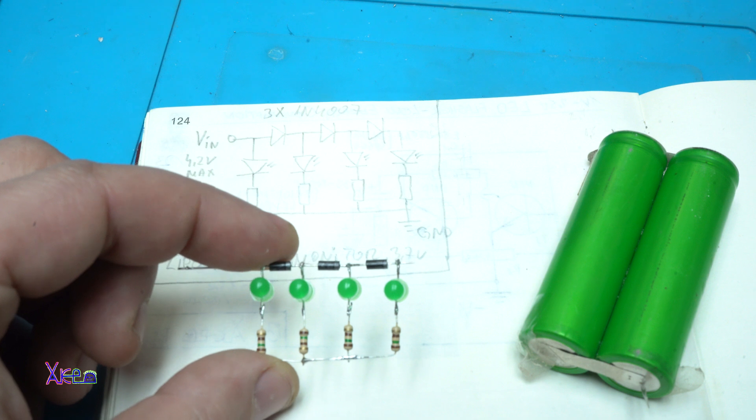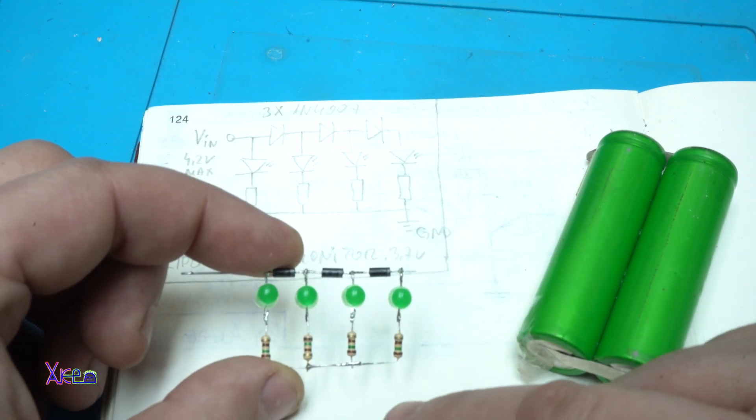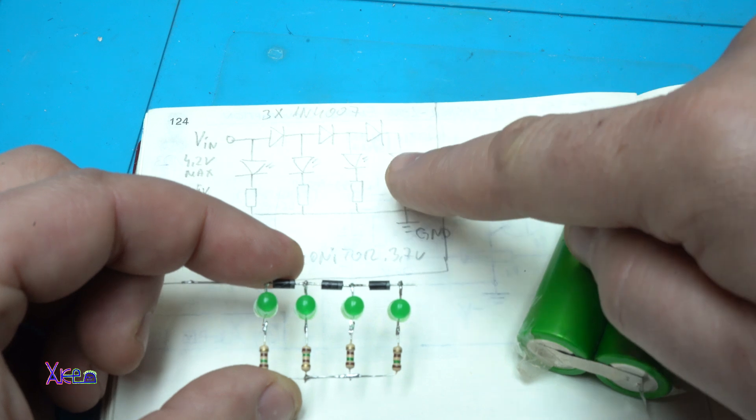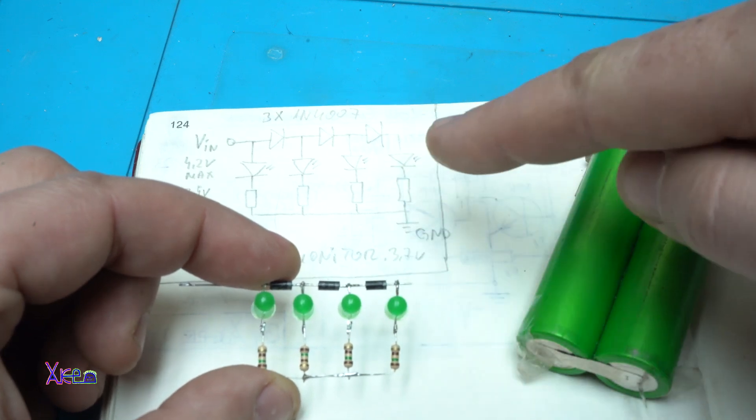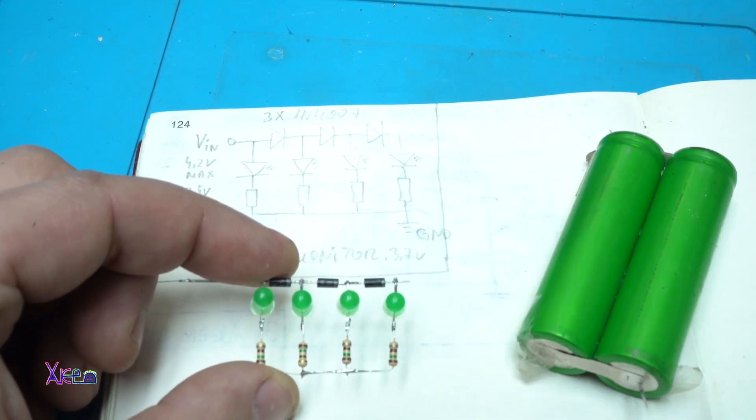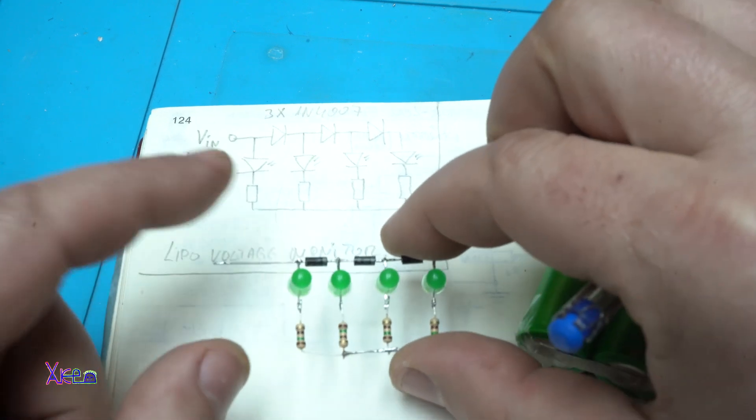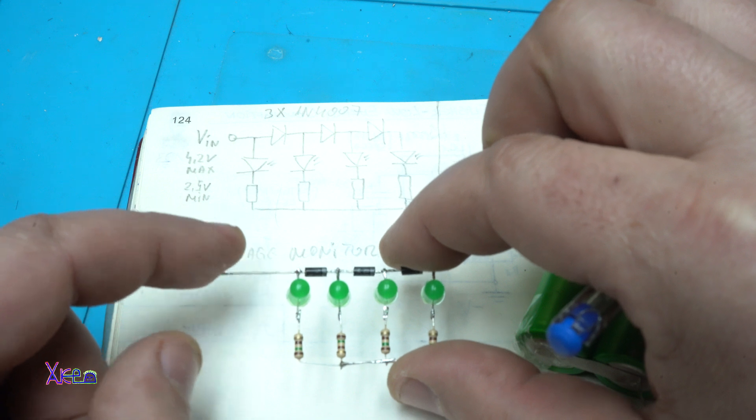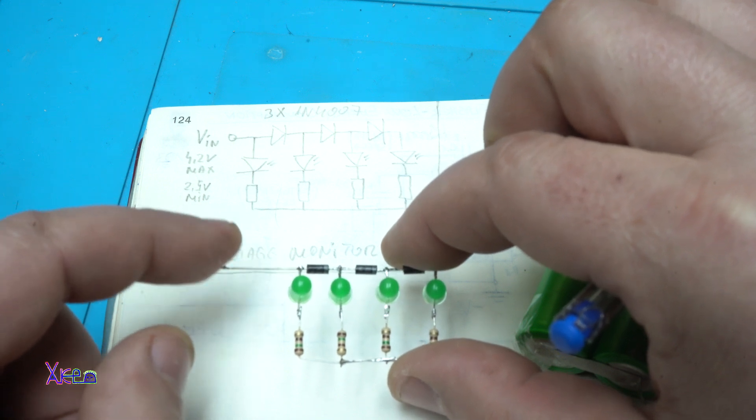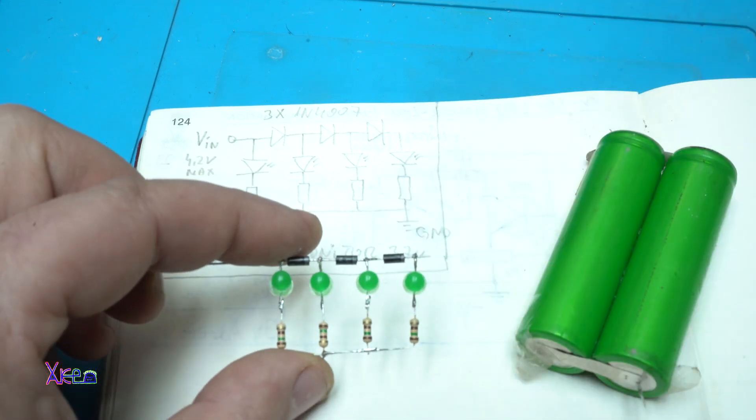I finished. 11 electronic components soldered all together just like on the schematic. You can see it's the same. Here we're gonna connect the ground and on this wire will be voltage in, positive voltage in.